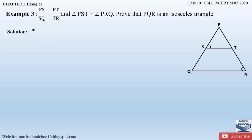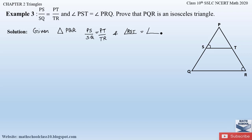Let us write down what is given in the question. In triangle PQR, PS divided by SQ is equal to PT divided by TR, and angle PST is equal to angle PRQ. What we have to prove is that triangle PQR is an isosceles triangle.